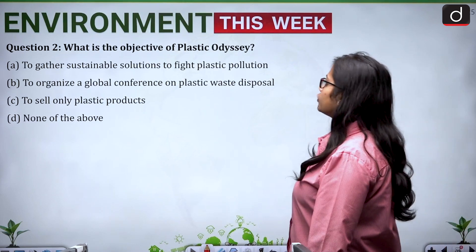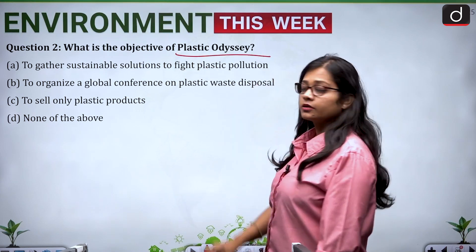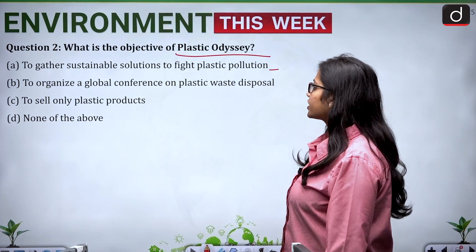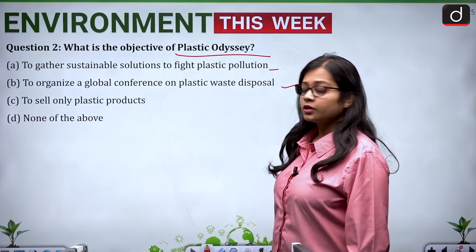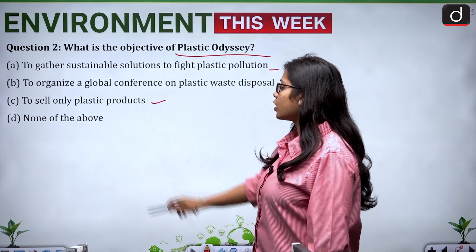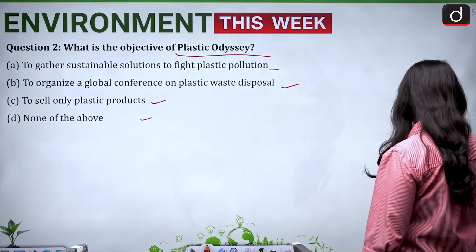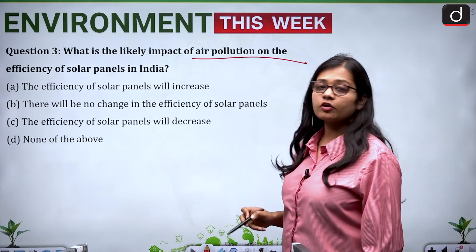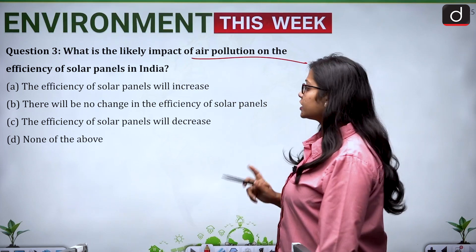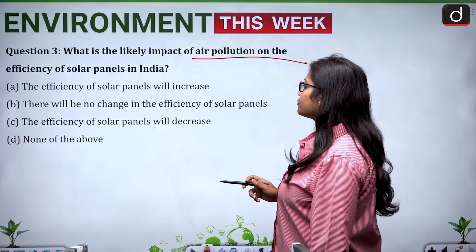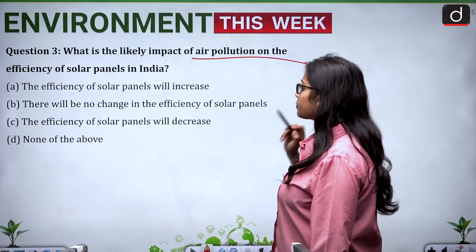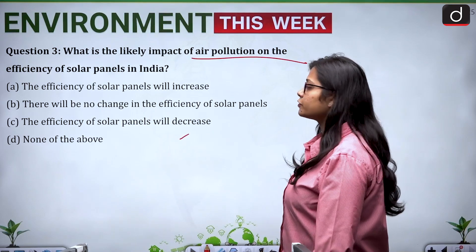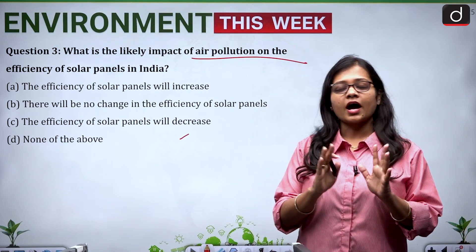The second question is: what is the objective of Plastic Odyssey? Options are: to gather sustainable solutions to fight plastic pollution; to organize a global conference on plastic waste disposal; to sell only plastic products; or none of the above. The third question is: what is the likely impact of air pollution on the efficiency of solar panels in India? Options are: efficiency will increase; no change; efficiency will decrease; or none of the above.